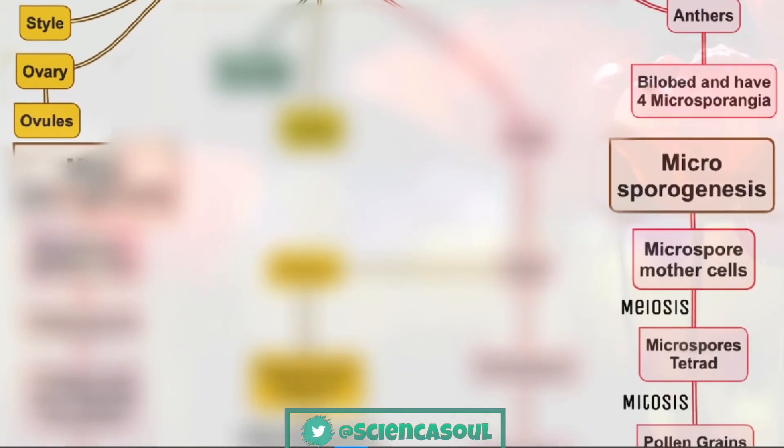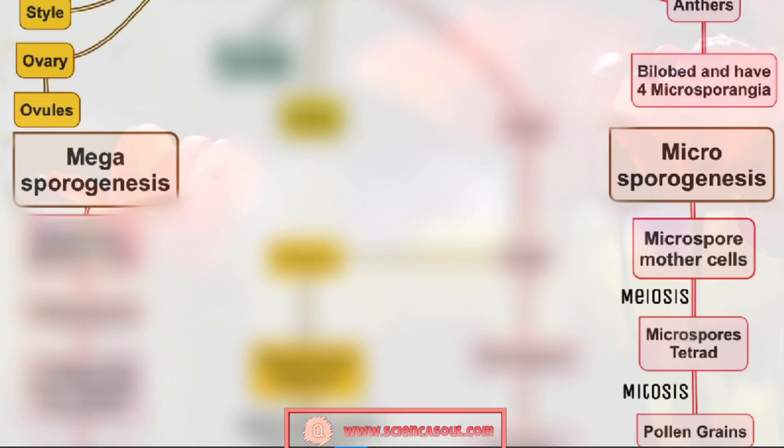In some plants, pollen grains are shed in a two-cell condition: a vegetative cell and a generative cell. In such plants, the generative cell divides and forms two male gametes during the growth of the pollen tube in the stigma. In plants which shed pollen grains in a three-cell condition, pollen tubes carry the two male gametes from the beginning. Pollination is the transfer of pollen grains from the male part - anther - to the female part - stigma - enabling fertilization and production of seeds.